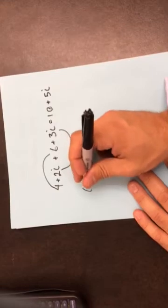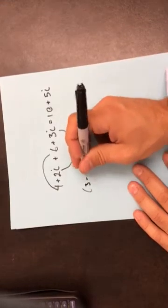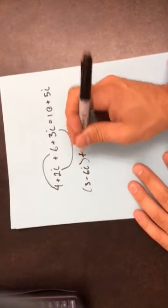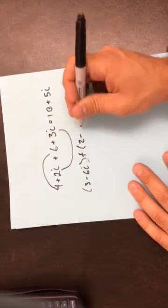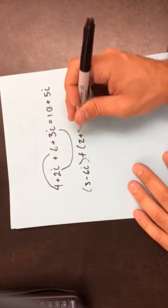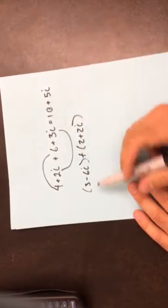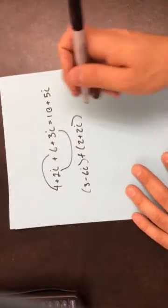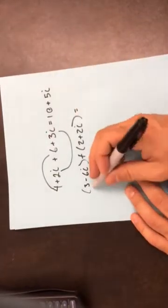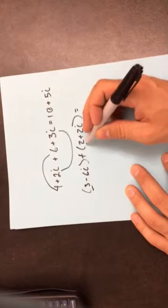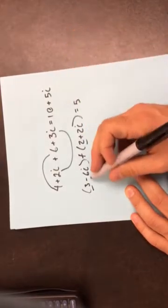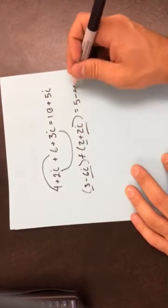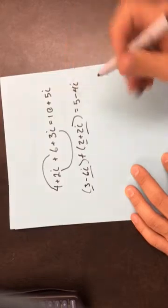Sometimes they'll put them in parentheses. When it's an addition, the parentheses don't really matter, so you're just going to follow the same process. 3 plus 2 is 5. Negative 6i plus 2i is negative 4i. And that's your answer.